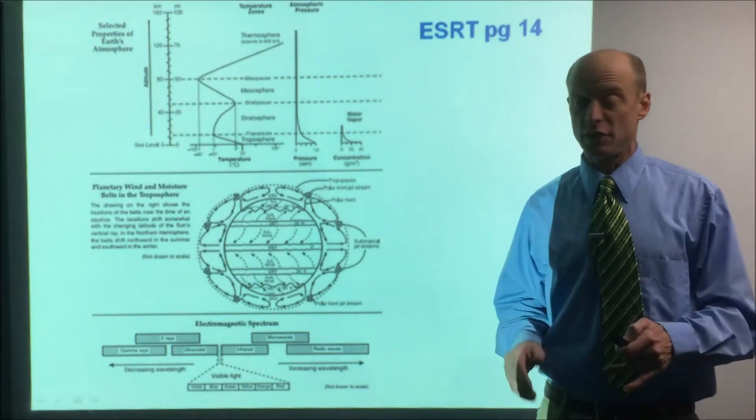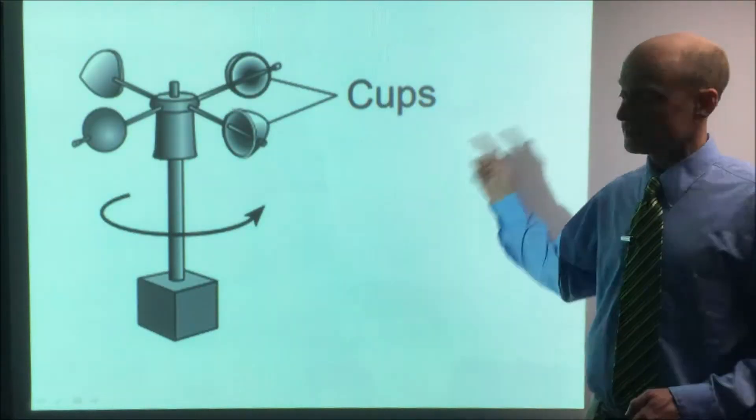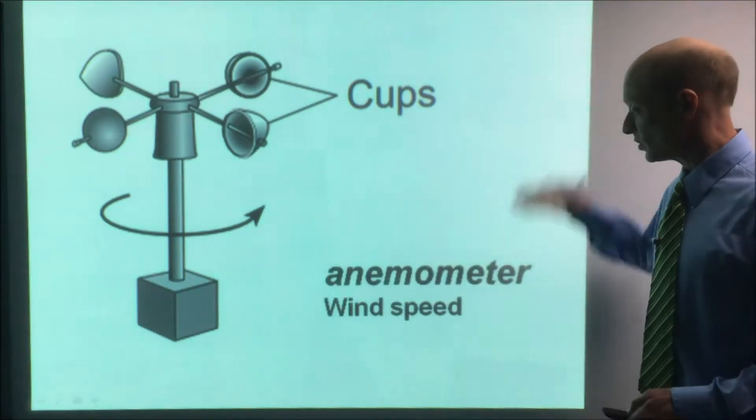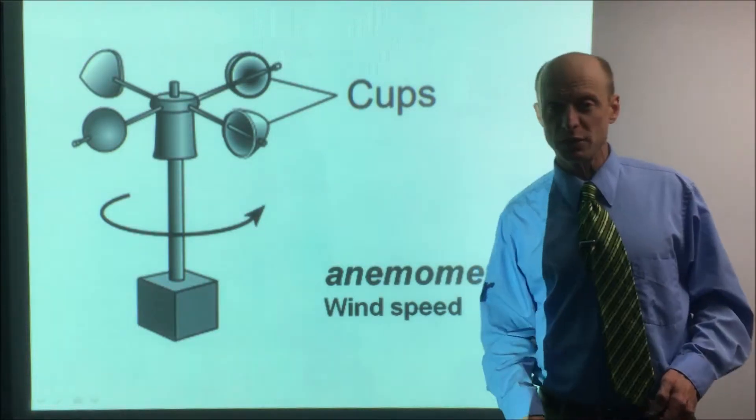So first we're gonna start with weather instruments. This here has the cups. It spins around. What's its name and what weather variable does it measure? It's called an anemometer and it measures wind speed. Know it.